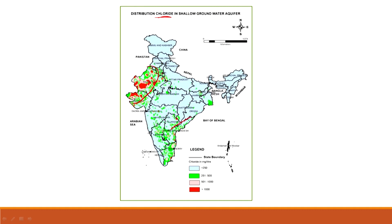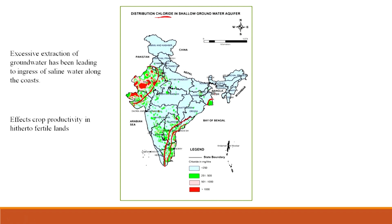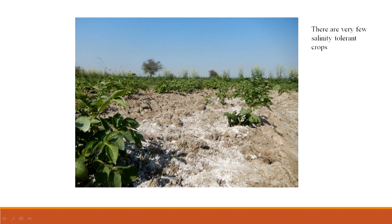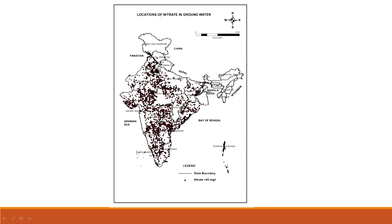Once the soil absorbs these salts, its productivity decreases exponentially. Distribution of chloride mirrors the salinity map — Rajasthan, Gujarat, and the coast. Over-extraction of groundwater is a key reason. These are the rice bowls of India, and salinity-affected soils can only support one or two crops not native to India. Nitrate is another major issue along with iron, fluoride, and salinity.